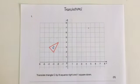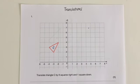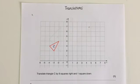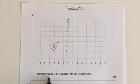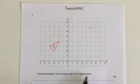So that's what a translation is, it's a movement of the shape on the grid. What it tells me in this question is that I'm going to translate triangle C by eight squares right and one square down.